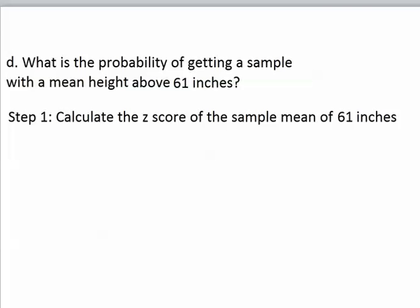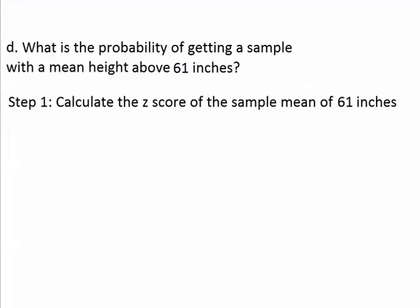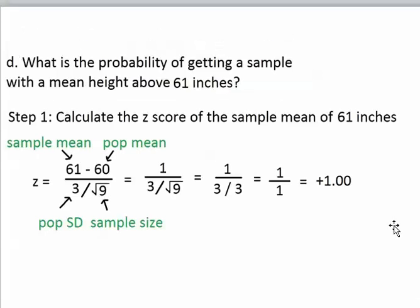First we have to calculate the z-score of the sample using this formula right here. We just subtract the sample mean of 61 by the population mean, and we put the population standard deviation and the sample size on the bottom. The sample mean came from this question up here, because the question is asking about 61 inches.